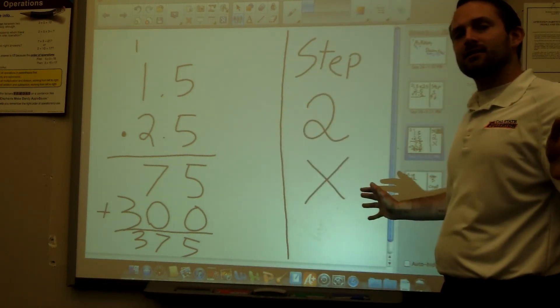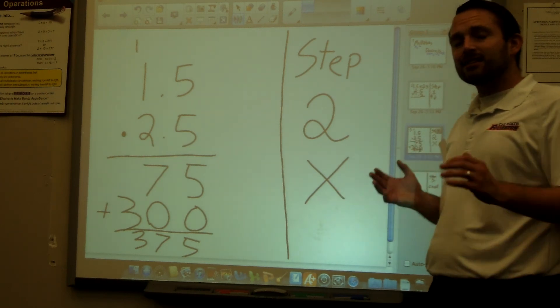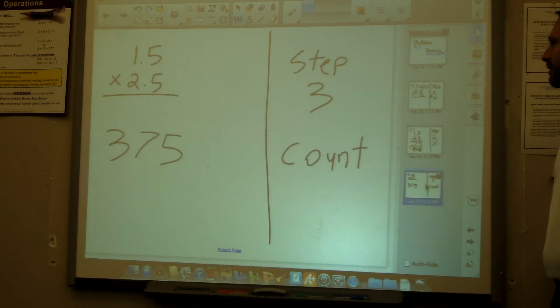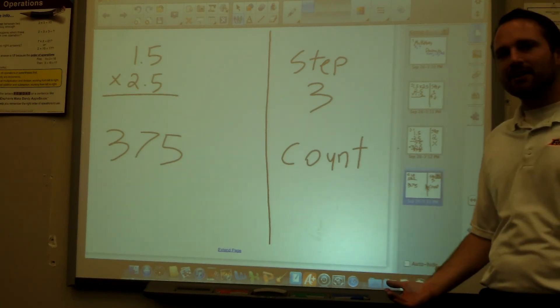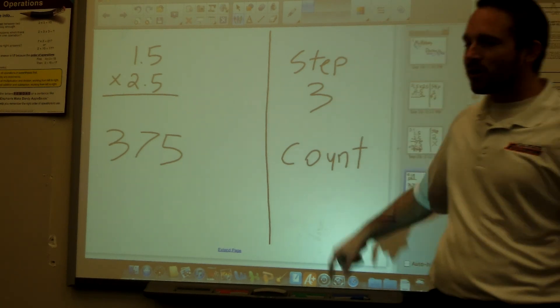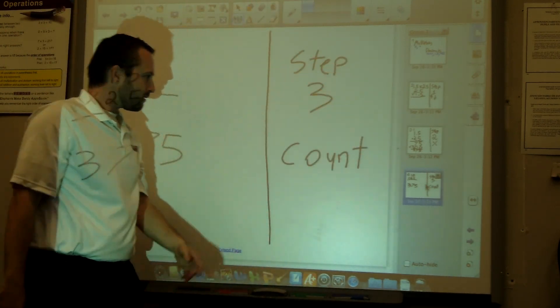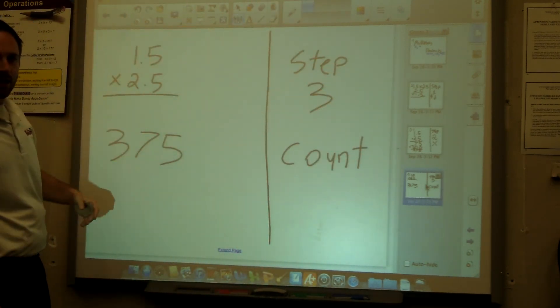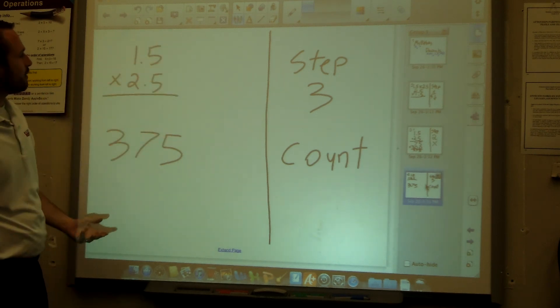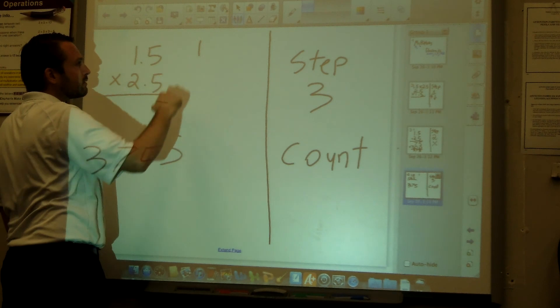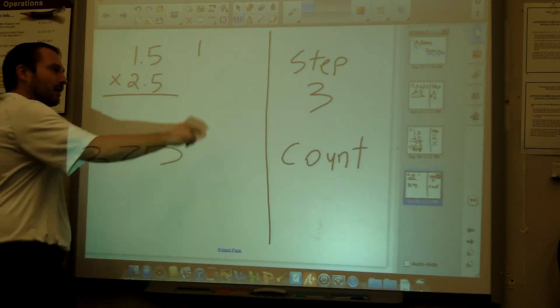Step 3: let's look back at those decimals. 1.5, how many numbers to the right does this decimal have? How many decimal numbers to the right are there? Well I have one right here, so I'm gonna go like this: one. I have one right here, so I'm gonna say one.